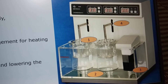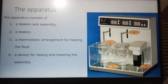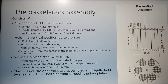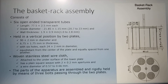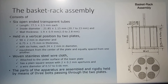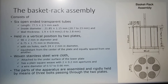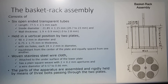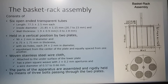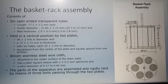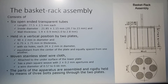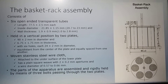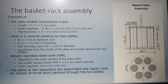We are now going to learn in depth about the basket rack assembly. This assembly consists of six open-ended transparent tubes. The dimensions of the tubes are defined in the USP. The tubes are of length 77.5 plus or minus 2 mm each. The inside diameter of the tubes is 21.85 plus or minus 1.5 mm.